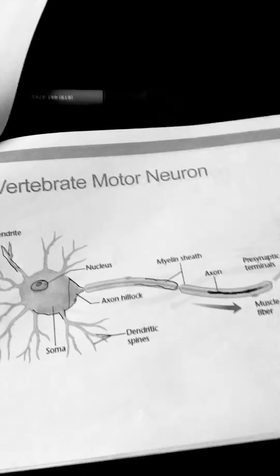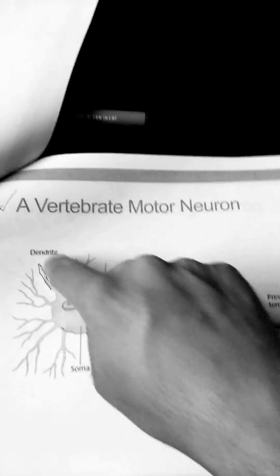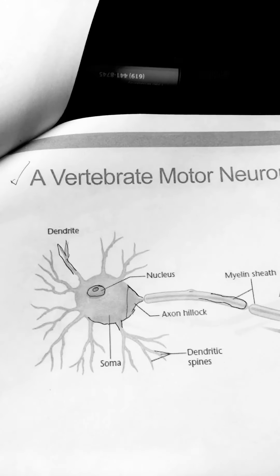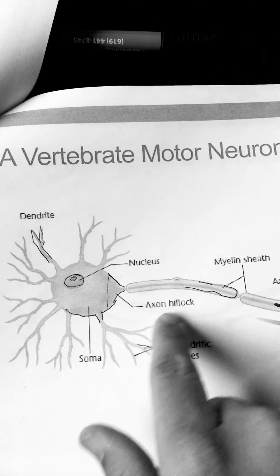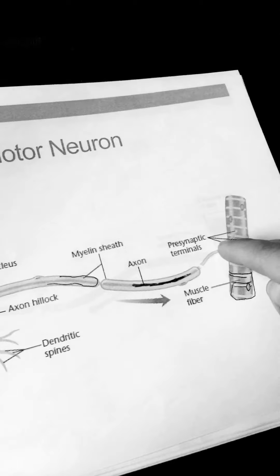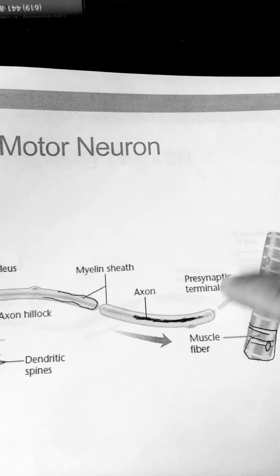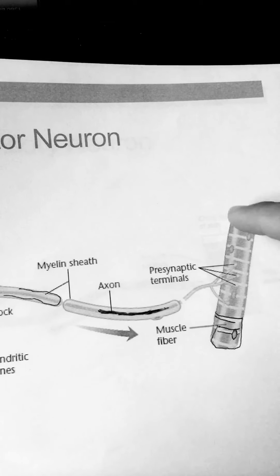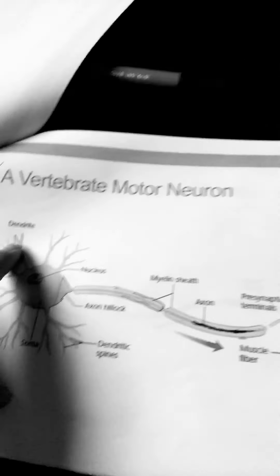Here's a picture of the motor neuron. You have your dendrites, which also have dendrite spines. Your nucleus is surrounded by the soma. It sends charges at the axon hillock, down the axon, and it's protected by the myelin sheath. Then you have your muscle fiber, which your presynaptic terminals make contact with.